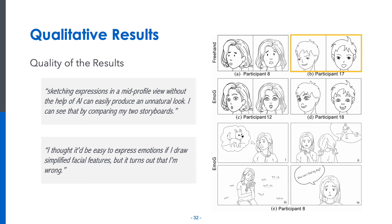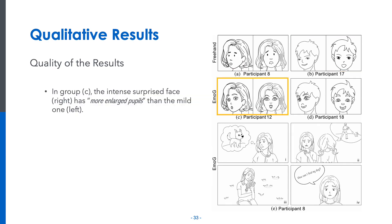One participant suggested that it's difficult to express emotions even using simplified facial features. The result of peer ratings suggested that more than one-third of the judges misinterpreted the happy face in group B as a disgusted or surprised face. Two participants observed that Emoji can generate more vivid expressions of different intensities. For example, in group C, the intense surprised face on the right has more enlarged pupils than the mild one on the left.